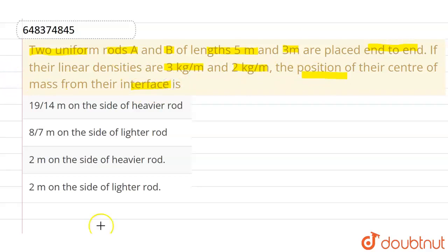So let us suppose this is the first rod whose length is 3m and this one is the second rod whose length is 2m. The linear density of this particular rod is not 3m, this is 5m. So this is 5m and this one is 3m. The first rod is 5m and the second rod is 3m. This is rod A and this is rod B.